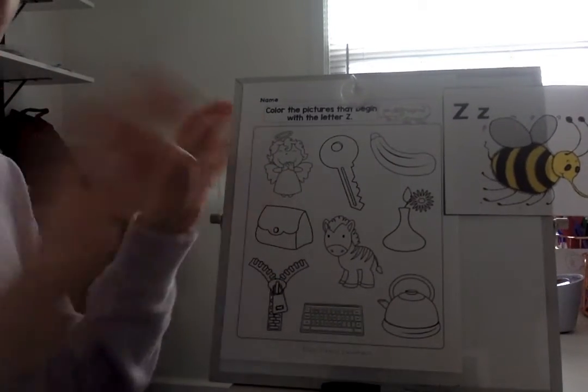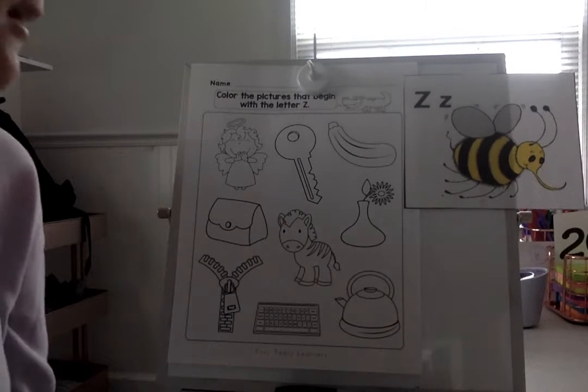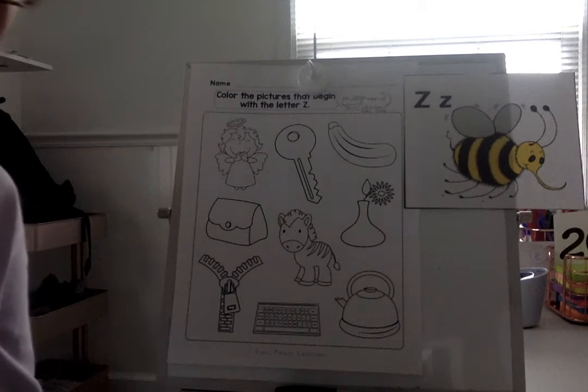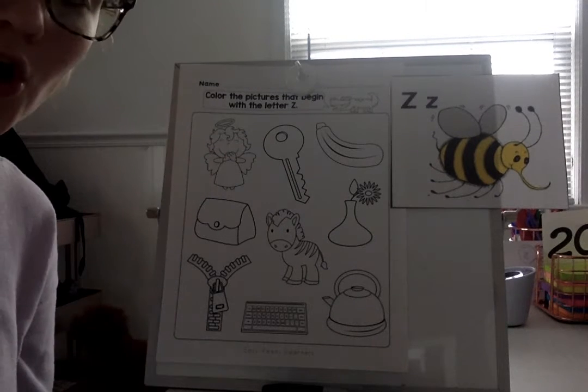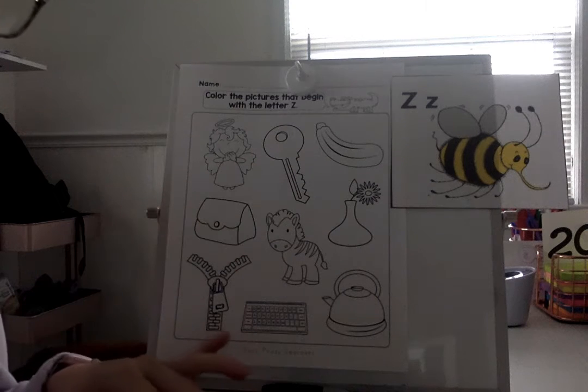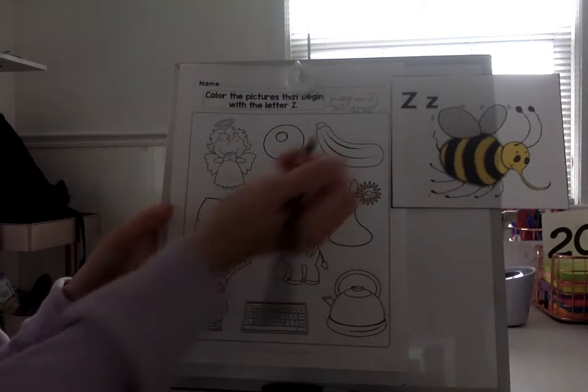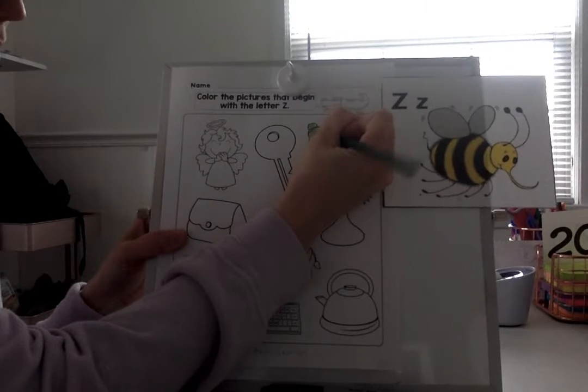Alright, so what do we have here? What's that a picture of? An angel. Angel. A-A-angel. Does that start with the letter Z? No. What about key? Key. K-K-K. Is that the letter Z? No. What about zucchini? Z-Z-Zucchini. Yes, that starts with the letter Z. So we can go ahead and color in our zucchini.